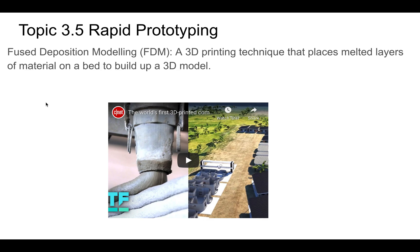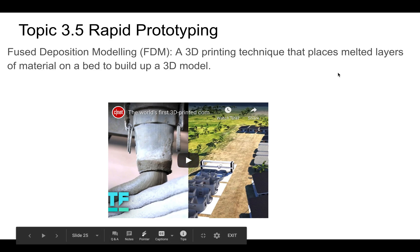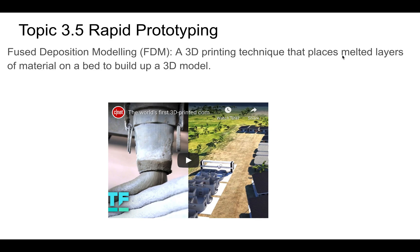This is called fused deposition modeling — this is essentially 3D printing. It places melted layers to build up an object. An interesting current example is 3D printing houses using a giant 3D printer and concrete. That would be fused deposition modeling because the concrete is fusing together, though it's in a liquid state rather than being melted. When we 3D print at school, we're melting plastic and placing layers on a bed — that's what our 3D printers are doing.